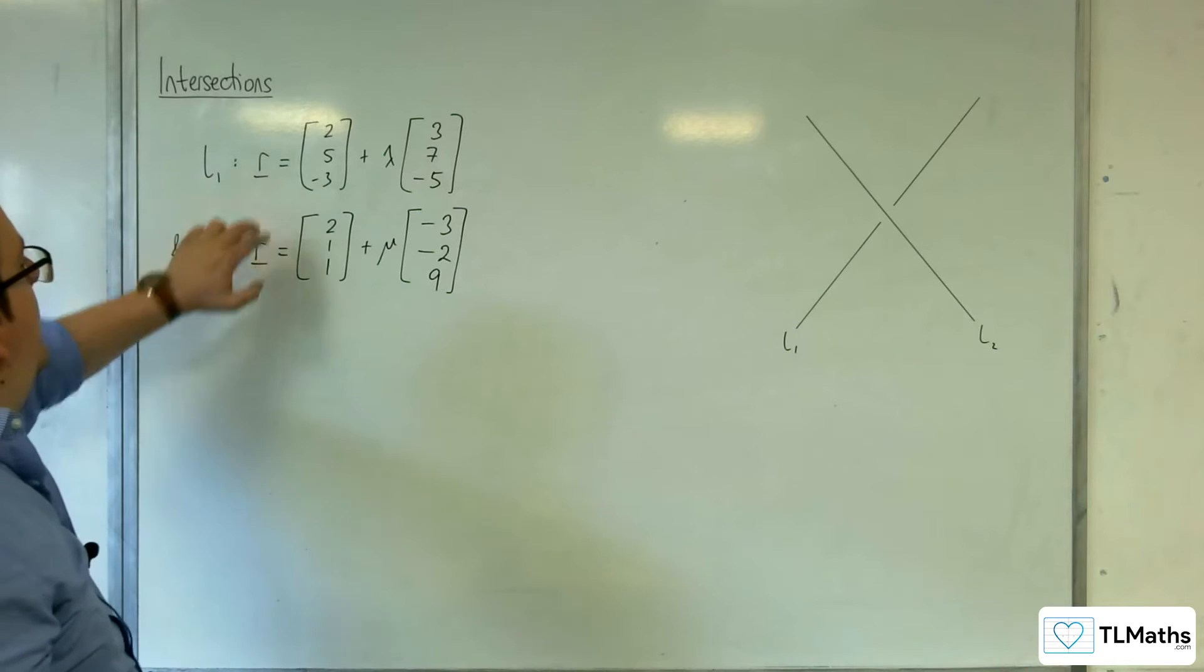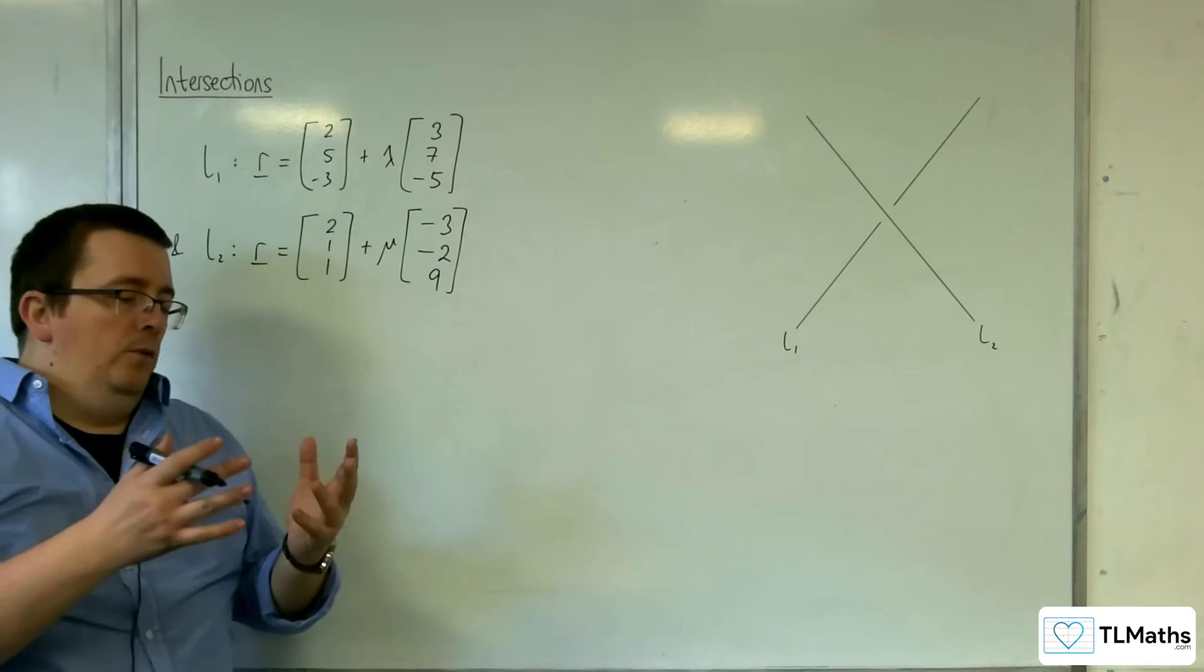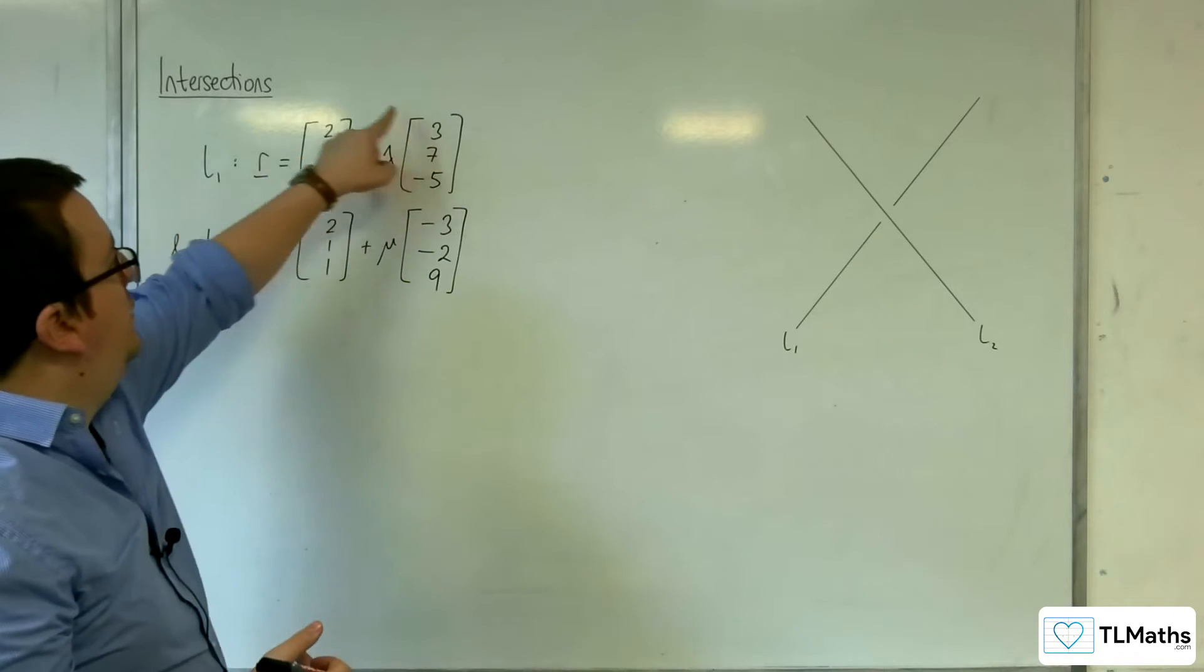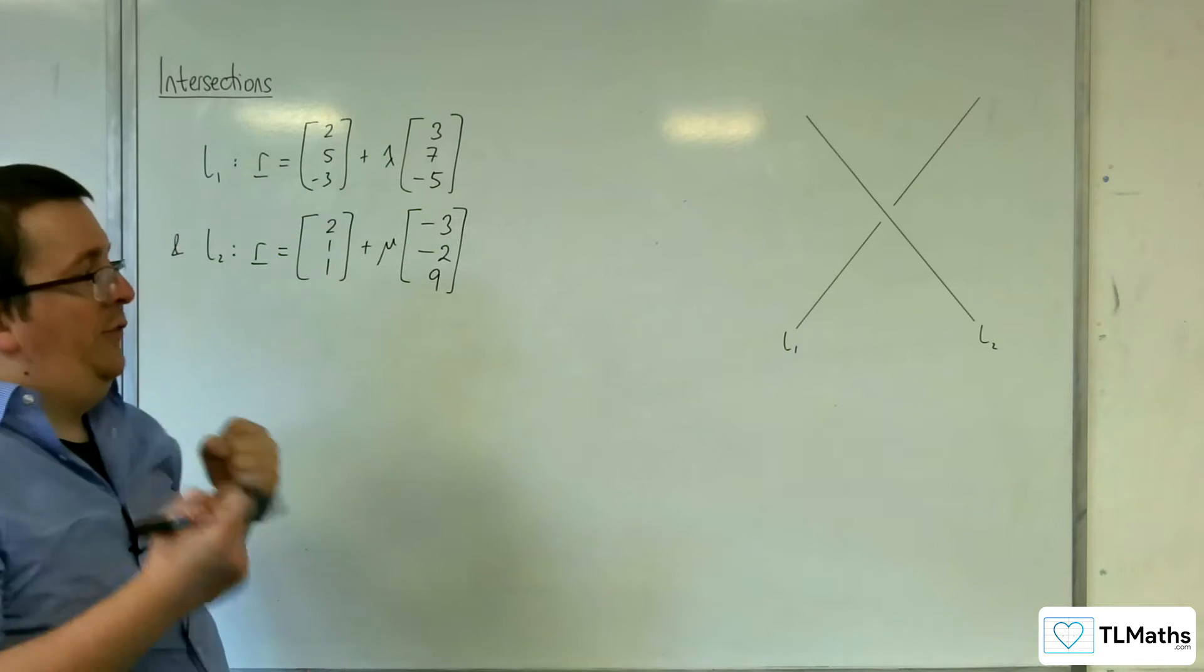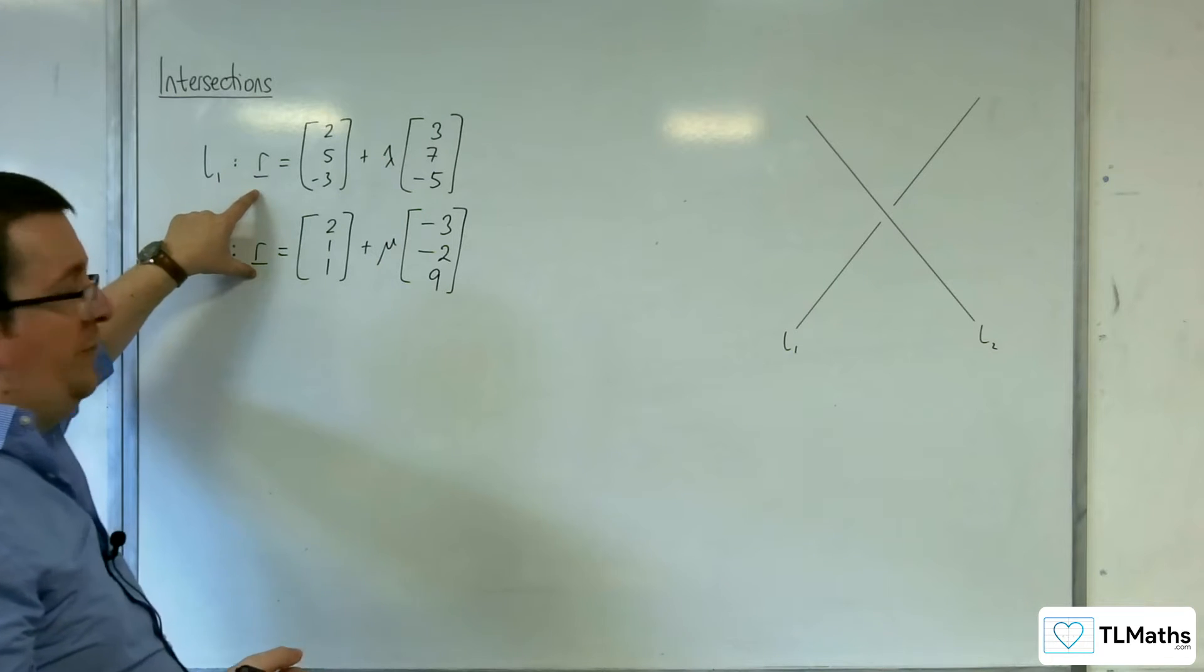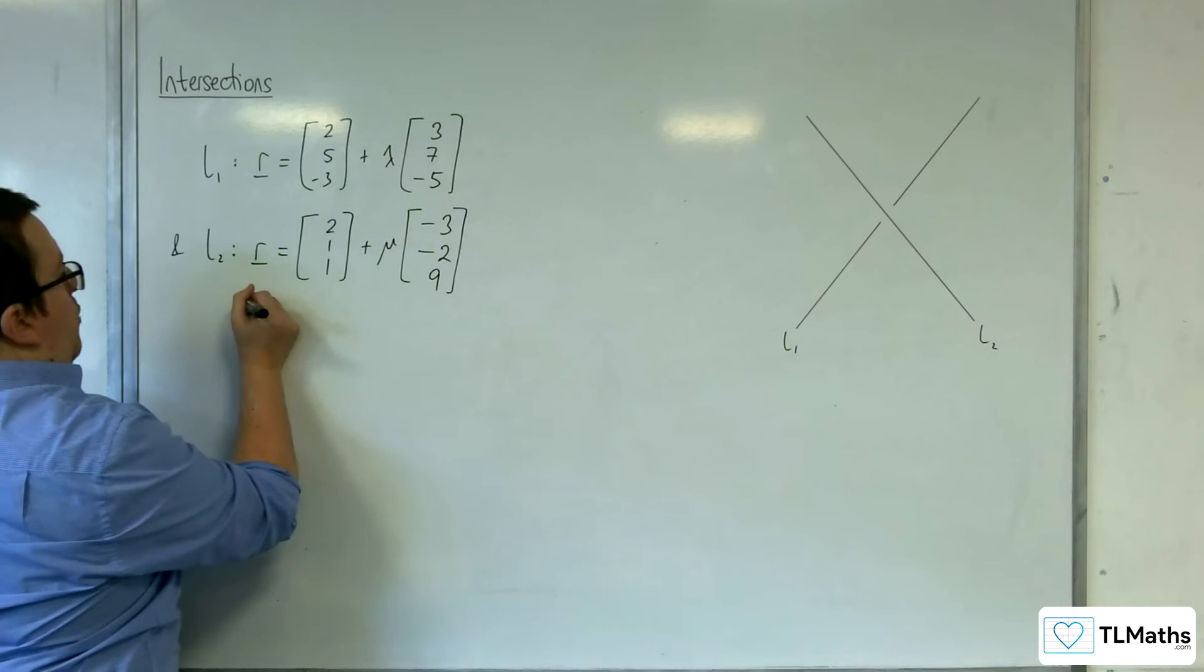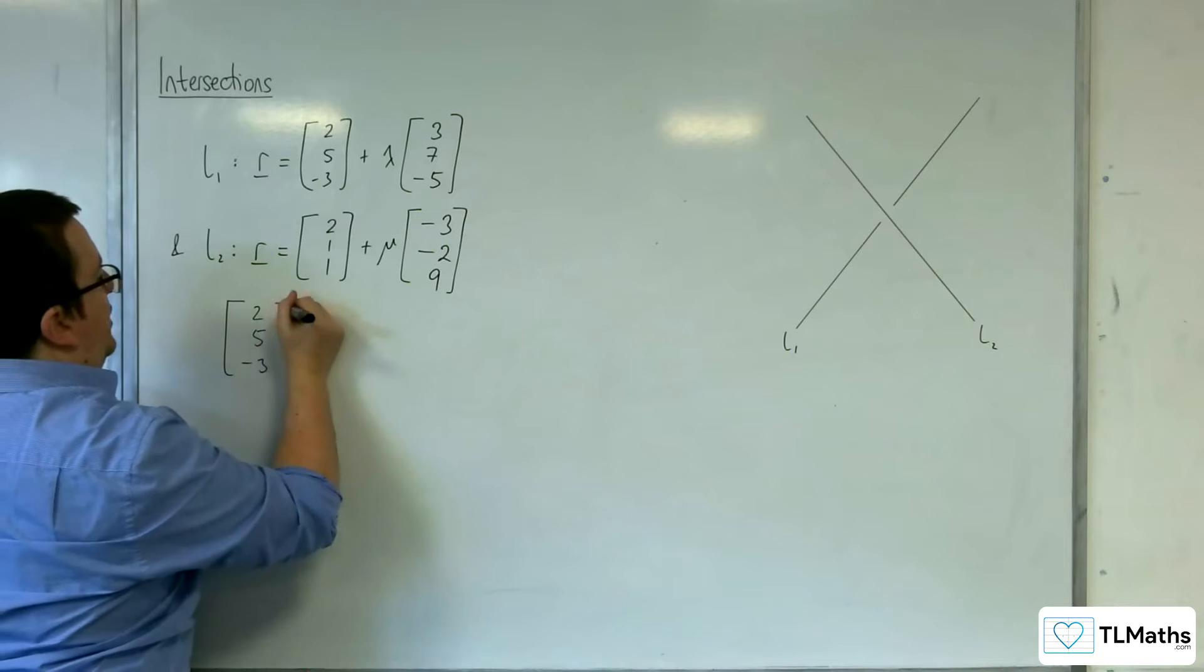So how can we actually determine whether they do intersect or not? Well, remember that R here represents X, Y, Z. So R is effectively saying any point that is on the line is governed by this. So if they are to be both the same, that they intersect at one point, then those R's have to be the same at that point. So that means we can put one equation equal to the other, as you might have expected we would do.